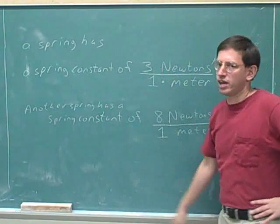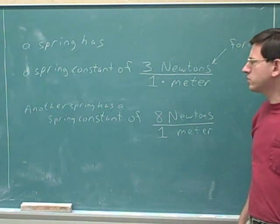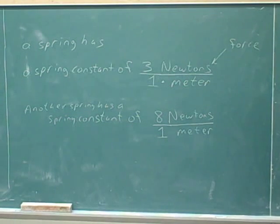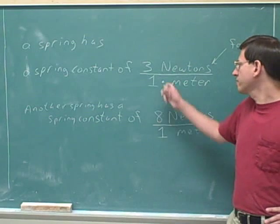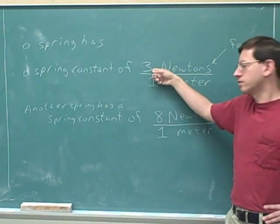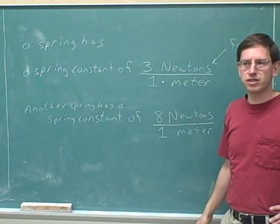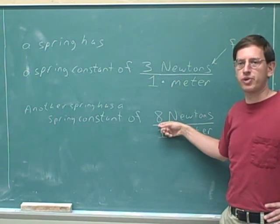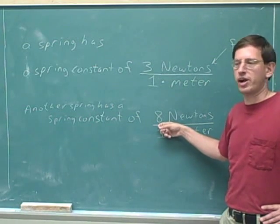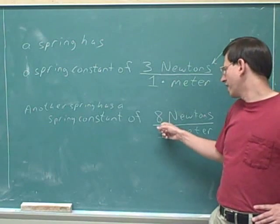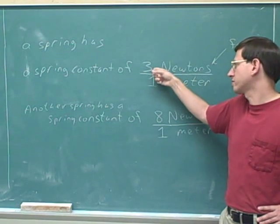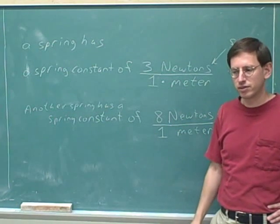So clearly, different springs can have different spring constants. Which of these two springs is stiffer? Well, if we compress both of them by one meter, the first spring only pushes against you with three newtons of force, but the second spring would push against you with eight newtons of force. So the second spring is the stiffer spring — it's harder to stretch or compress. To keep the second spring compressed by one meter, we have to exert a force of eight newtons, but to keep the first spring compressed by one meter, we only have to exert three newtons.